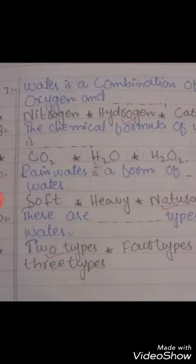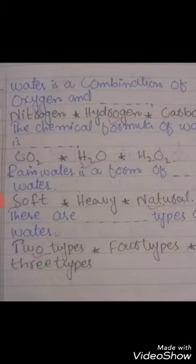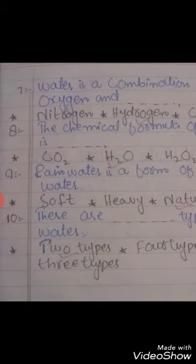Number 8: The chemical formula of water is dash. Options: CO2, H2O, H2O2. Correct option is H2O.